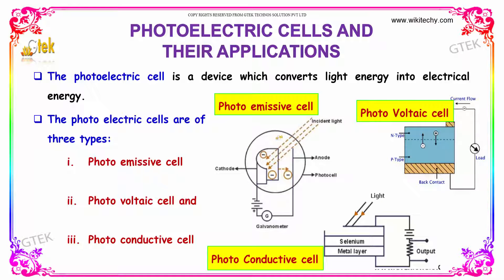One is a photoemissive cell, where light will be emitted. A photovoltaic cell has chemicals with an N and P type kind of structure. And the other one is a photoconductive cell, which absorbs light and conducts electricity.